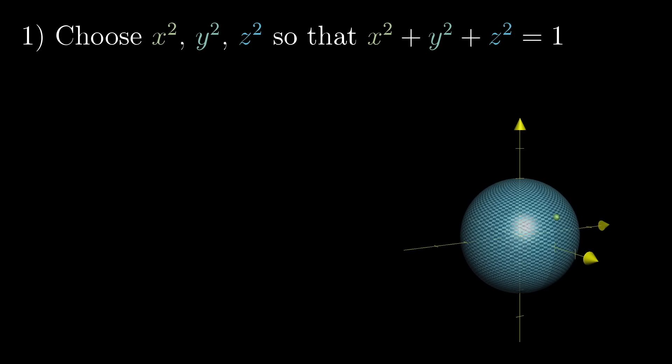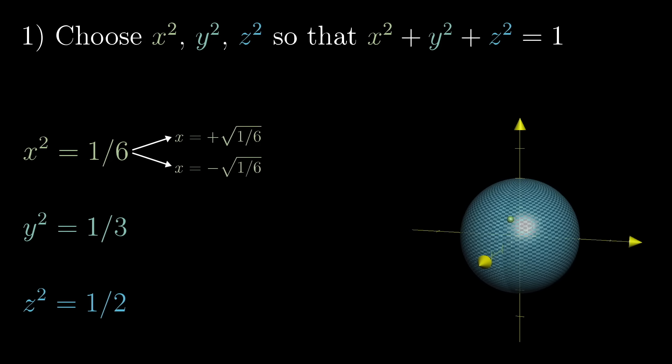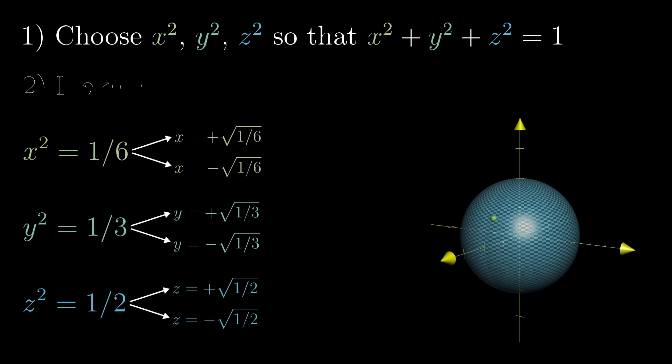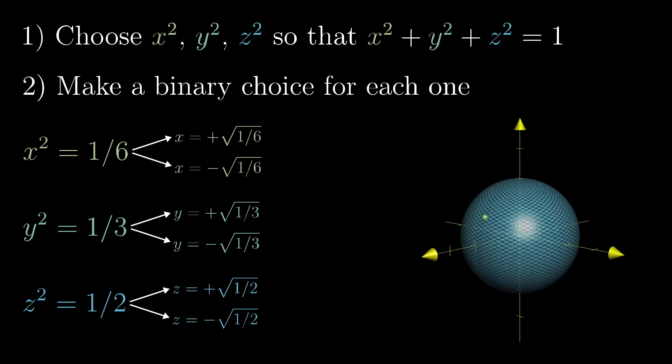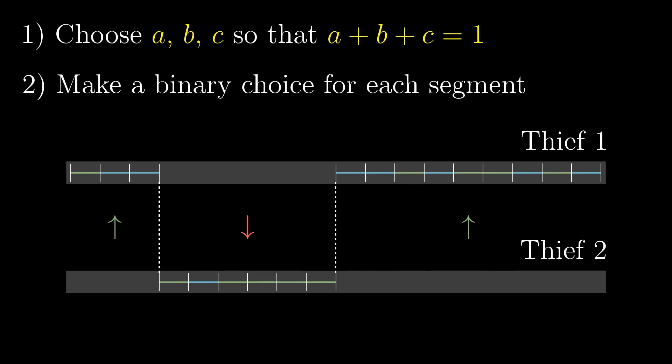Well, you might start off by choosing three positive numbers that add to one. Maybe you want x squared to be one-sixth, y squared to be one-third, and z squared to be one-half. Then you have to make a binary choice for each one of them, choosing whether to take the positive square root or the negative square root in a way that's completely parallel to dividing the necklace and allocating the pieces.